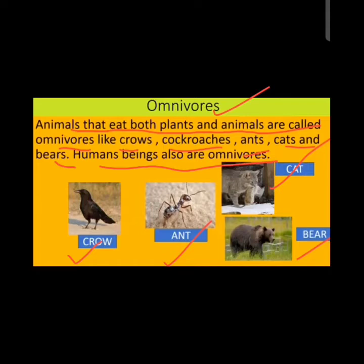Other examples of omnivores include bear, crow, and human beings. Human beings are the most common example of omnivores because they eat both plants and animals.